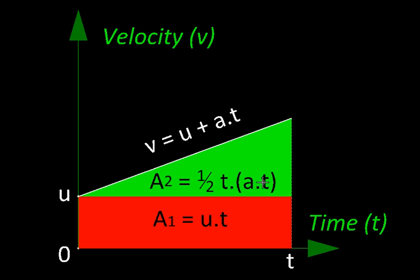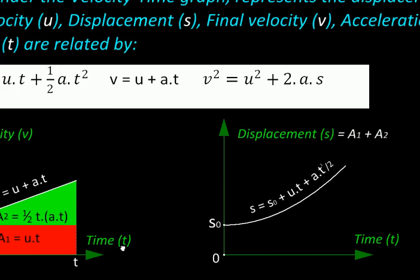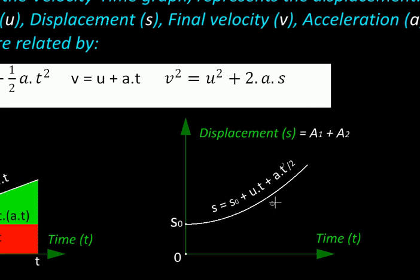And if you open this bracket and simplify this then you will see a t square appearing here, the square of time. And that is how the distance covered for a uniformly accelerated body gets proportional to the time square. If we plot that distance covered then we would get a parabolic graph like this.